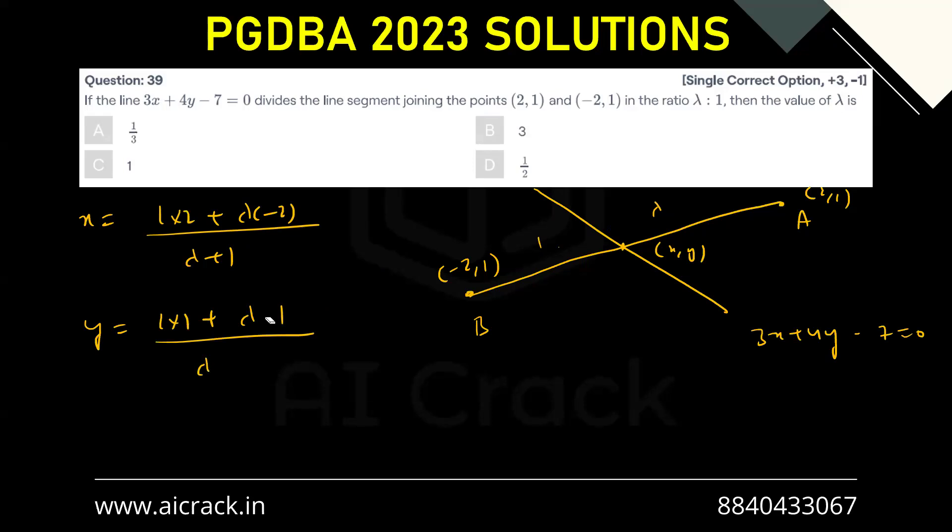Now this becomes 1 only because this is 1, this is lambda, and we have lambda plus 1 in the denominator as well. So we get 1 over here, and over here we get (2 minus 2 lambda) divided by (lambda plus 1).